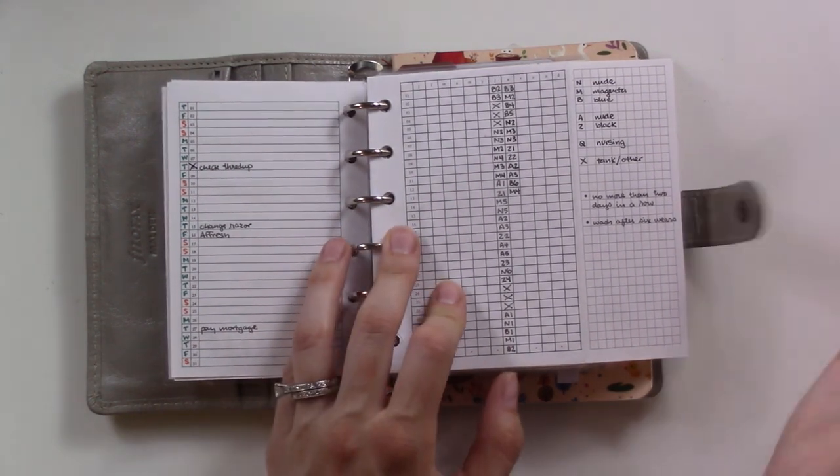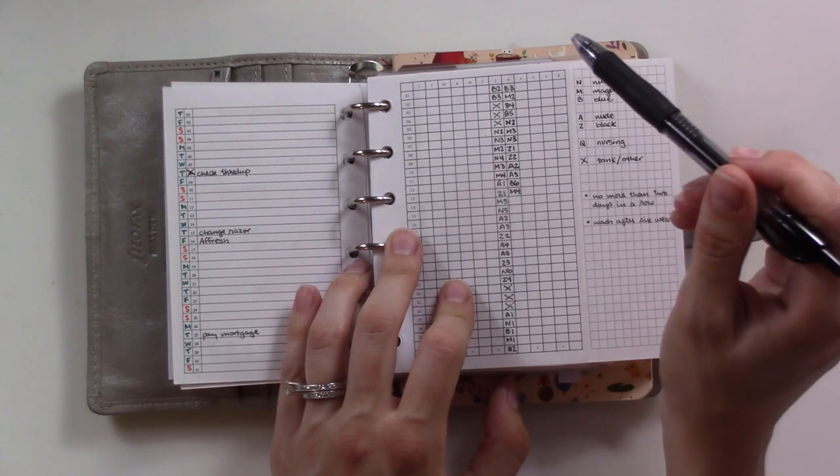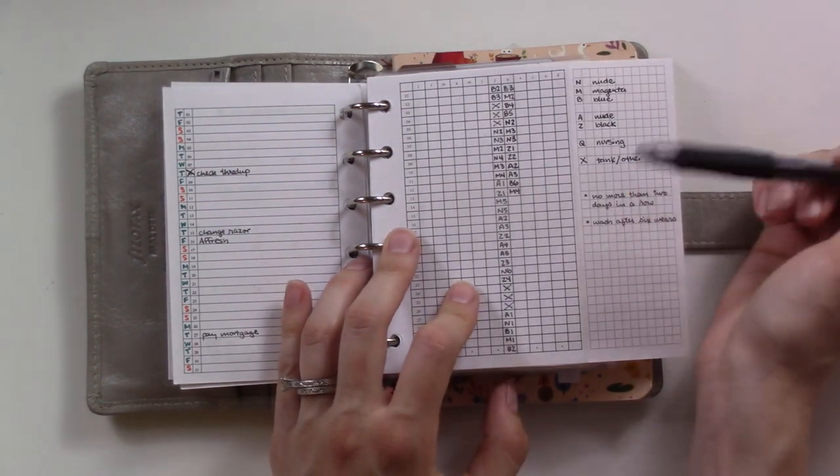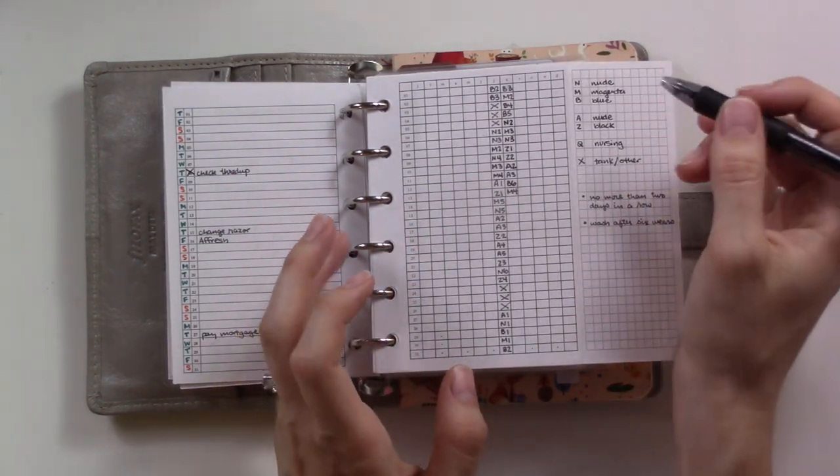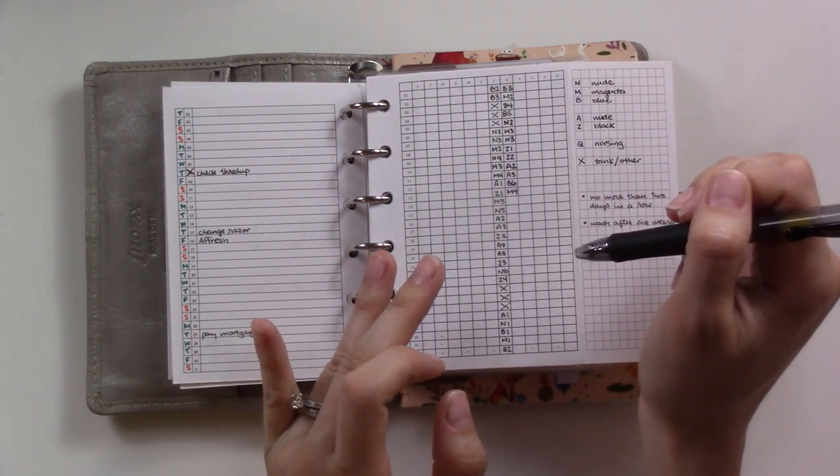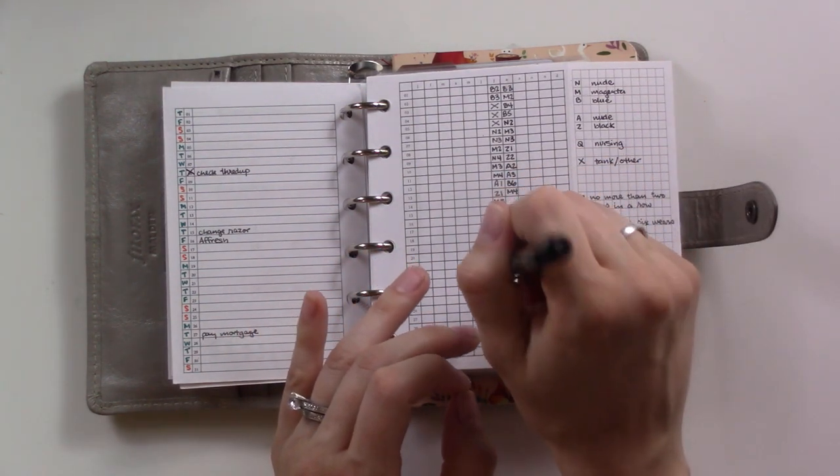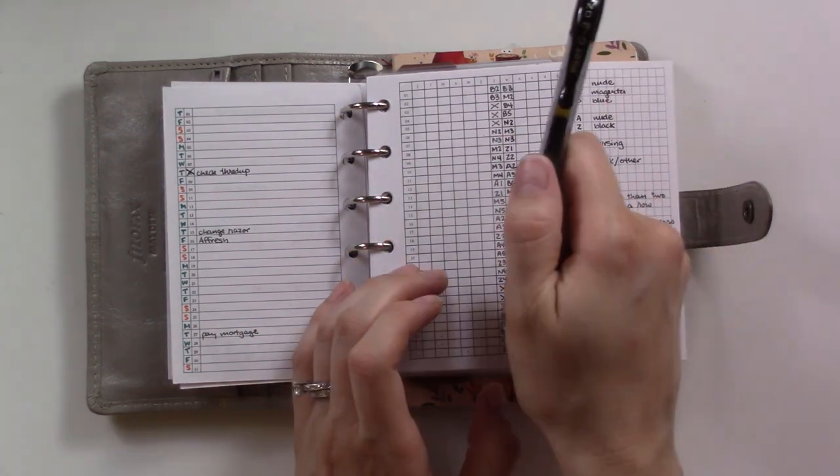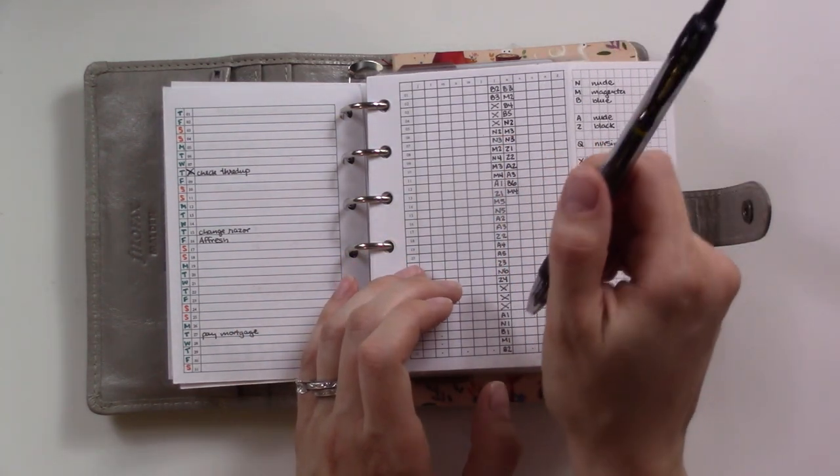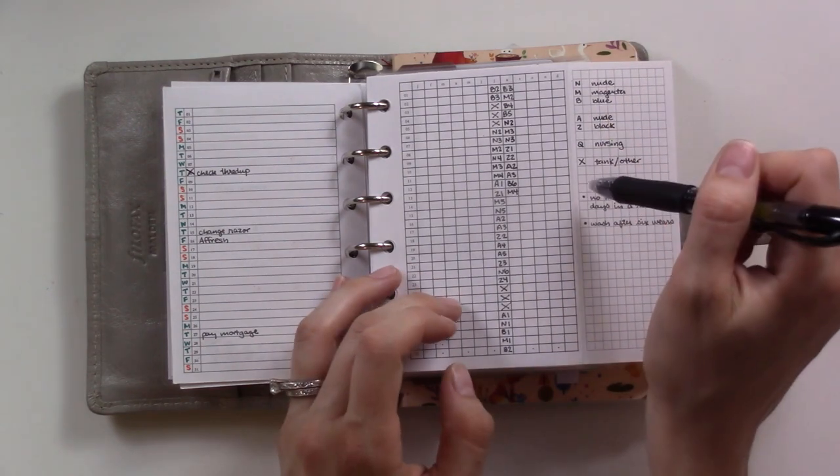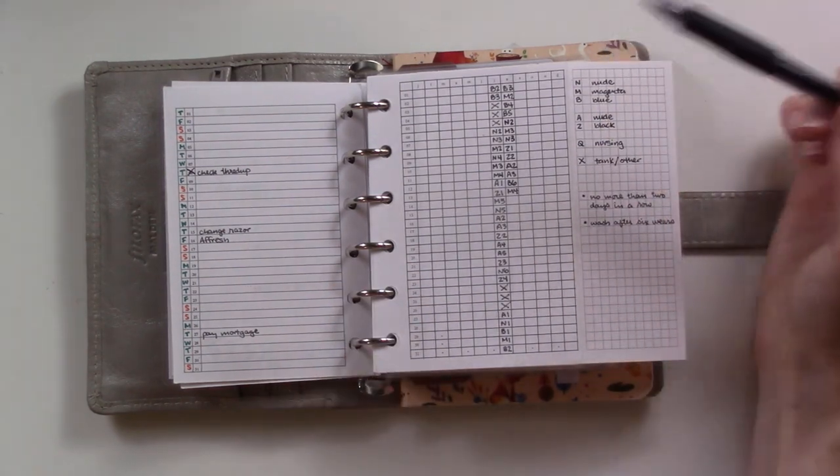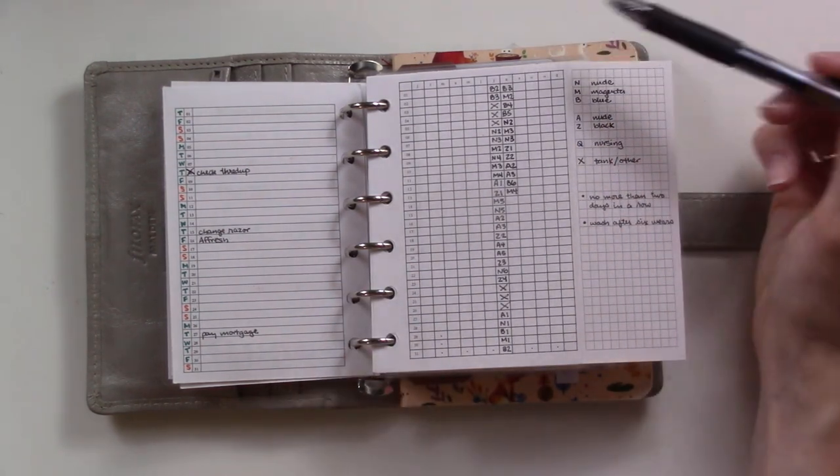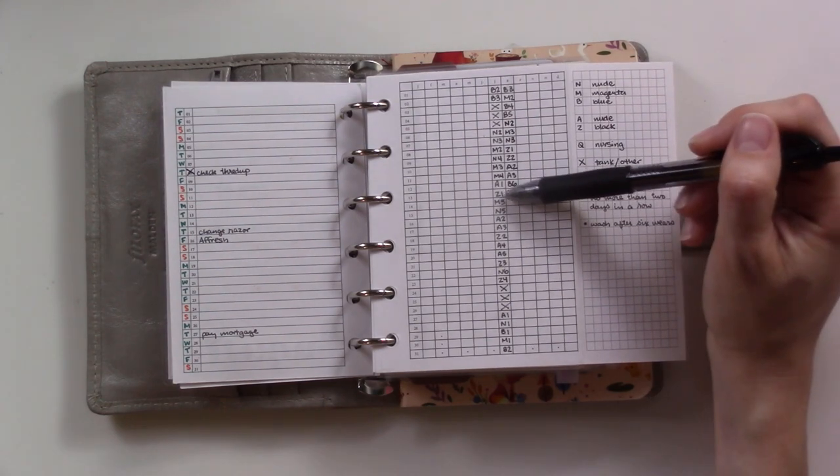This tracker started off with a color code. I had a little dot and then I drew a line every time I washed it. It was beautiful but it was a pain because I would have to have those colors with me. Using letters is a lot easier. I love that this is all just on one page for the entire year because this little box is all I need every single day.